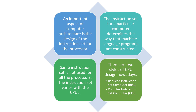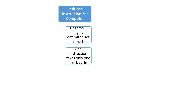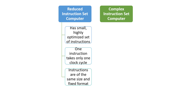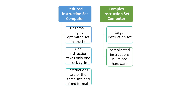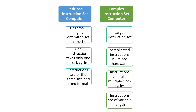There are two styles of CPU design today: reduced instruction set computer (RISC) and complex instruction set computer (CISC). RISC has a small, highly optimized set of instructions where each instruction takes only one clock cycle and instructions are of the same fixed size and format. CISC has a larger instruction set where complicated instructions are built into hardware, instructions can take multiple clock cycles, and instructions are of variable length. Subscribe to my channel if you feel contented, and like and share the videos with your friends. Thanks.